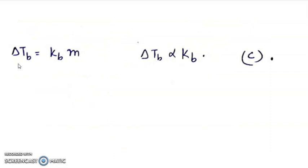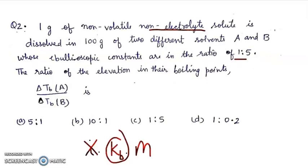Delta Tb is equal to Kb into m. I is not here because it is non-electrolytic. Delta Tb is directly proportional to Kb, so this ratio is 1 is to 5.